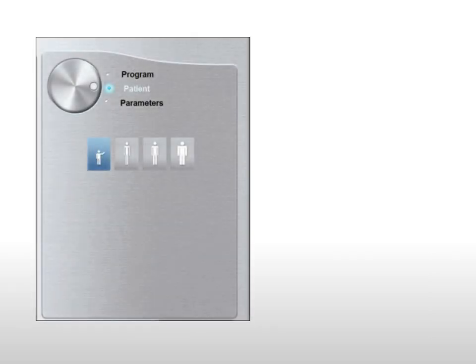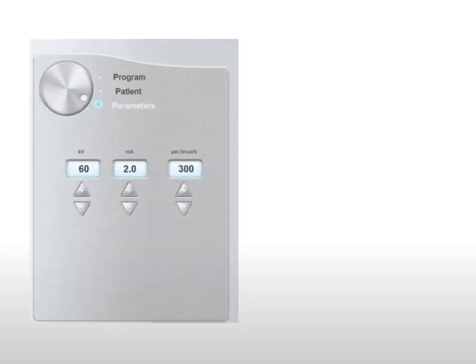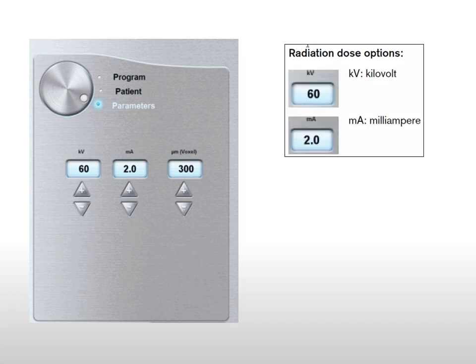Next, click the patient button and select the patient size. Selection of the patient parameter determines image quality and correct positioning of small field of view images. Patient type is based on the age and morphology of the patient. The parameter pane enables you to choose exposure parameters for the radiological image acquisition. If the default parameter setting is inappropriate for your patient type, you can update these settings manually.